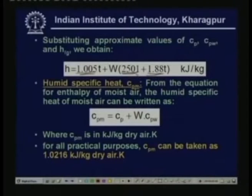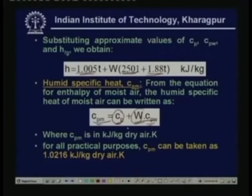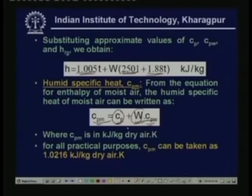The humid specific heat CPM is the specific heat of moist air. From the enthalpy equation, CPM = CP + W·CPw, where CP is the specific heat of dry air, W is the humidity ratio, and CPw is the specific heat of water vapor at constant pressure. The units are kJ/kg dry air per Kelvin. For practical purposes, using a mean value of humidity ratio, CPM ≈ 1.0216 kJ/kg dry air·K.